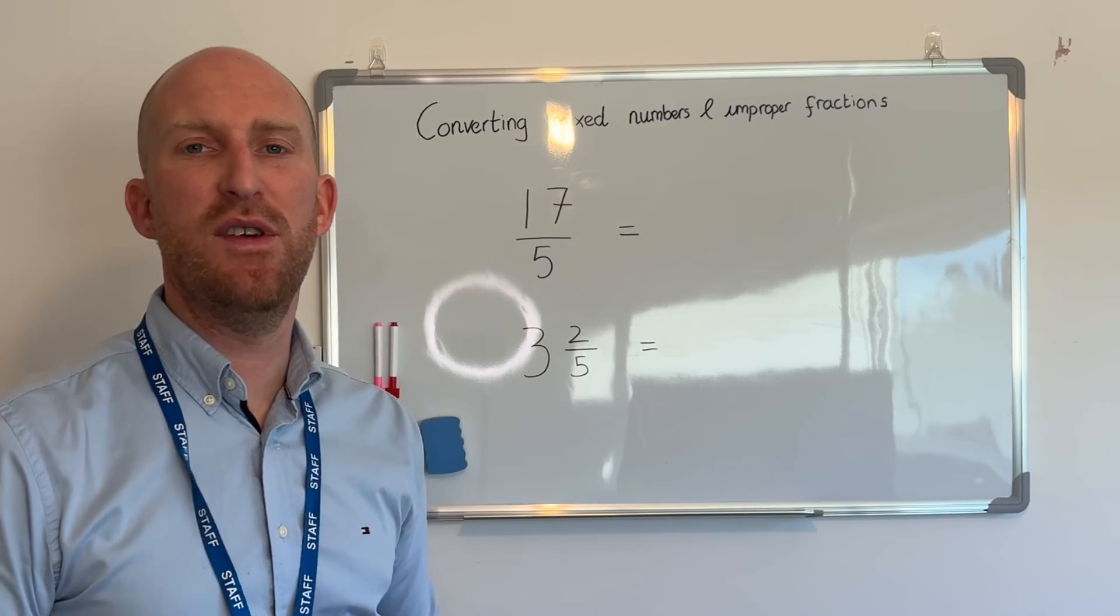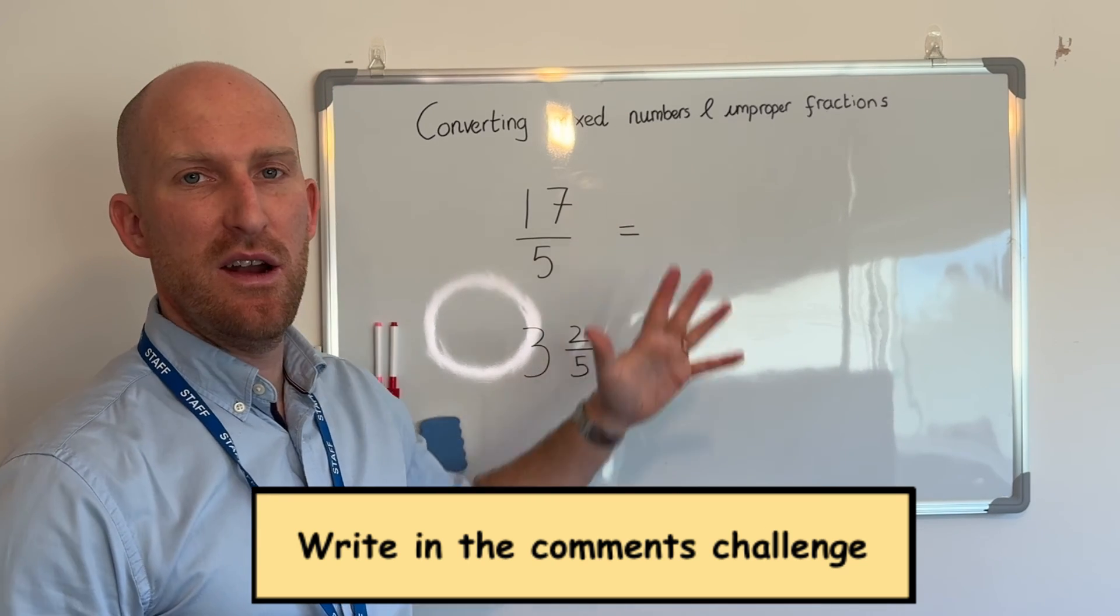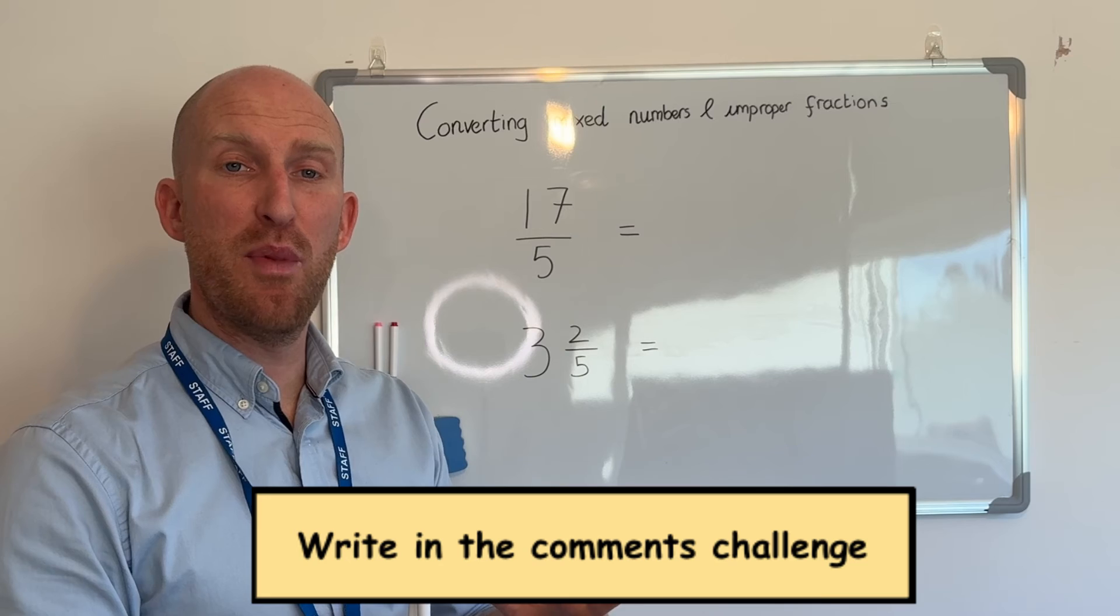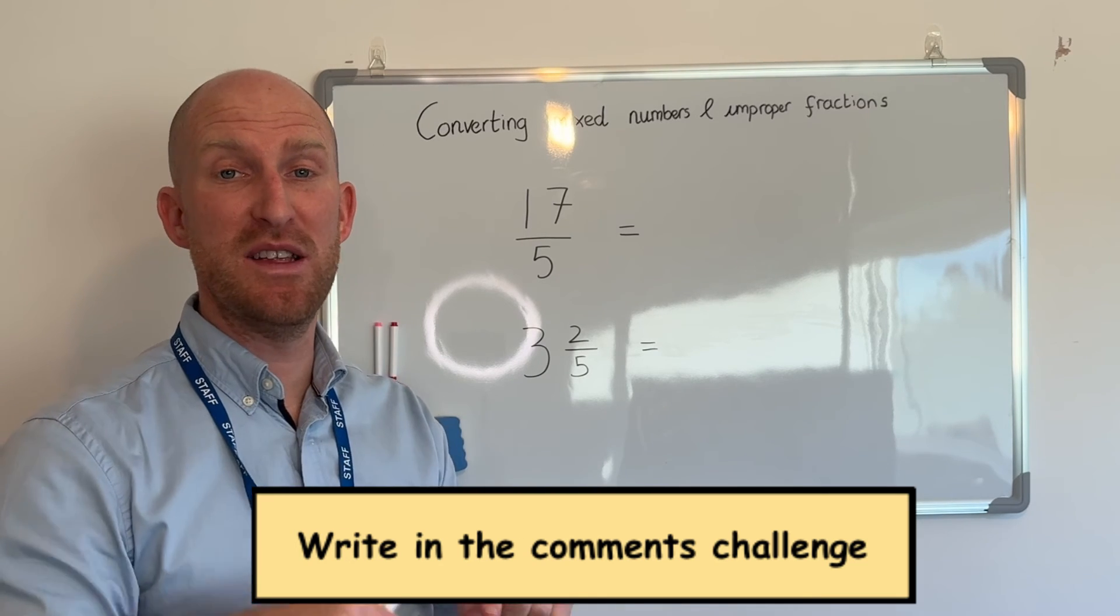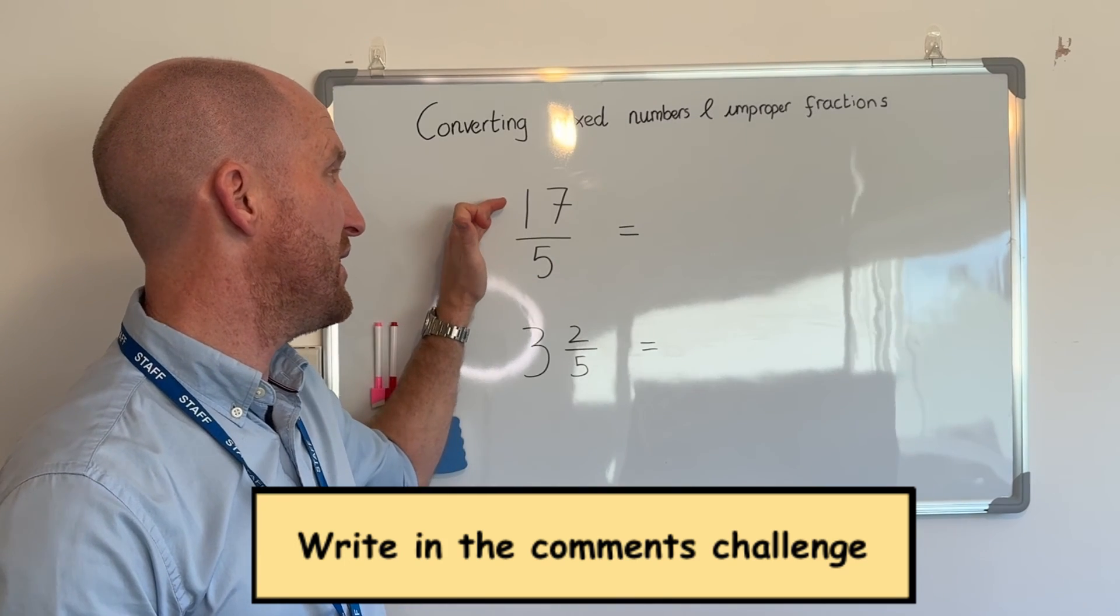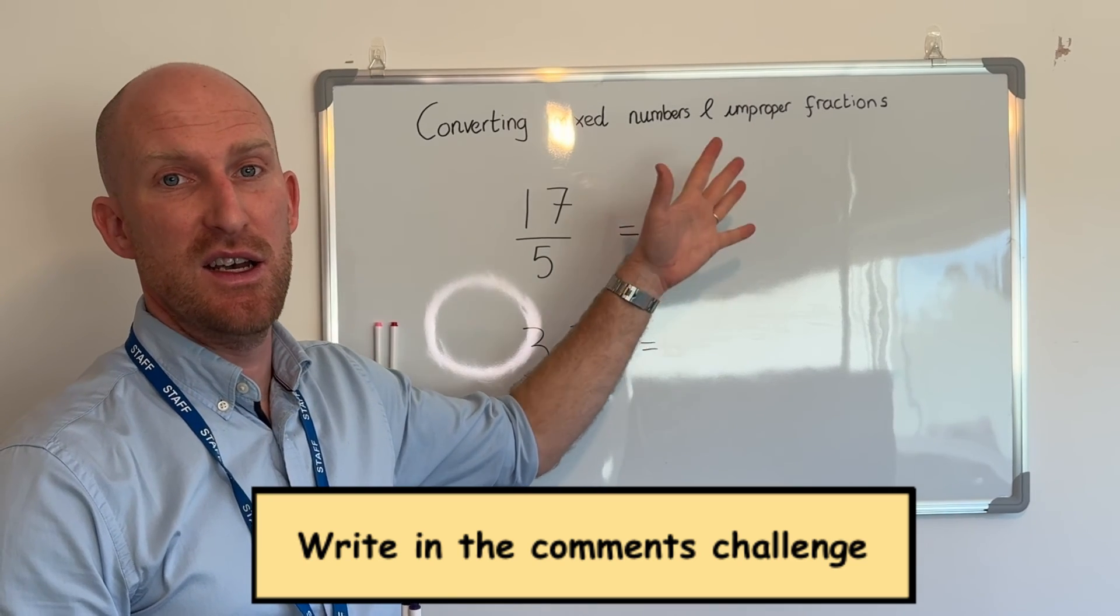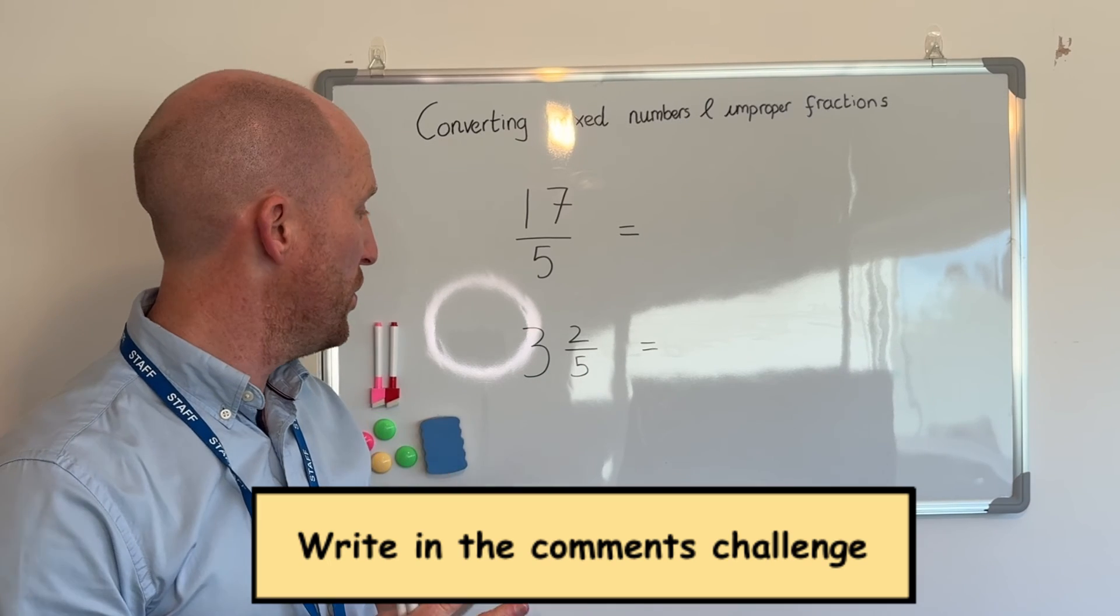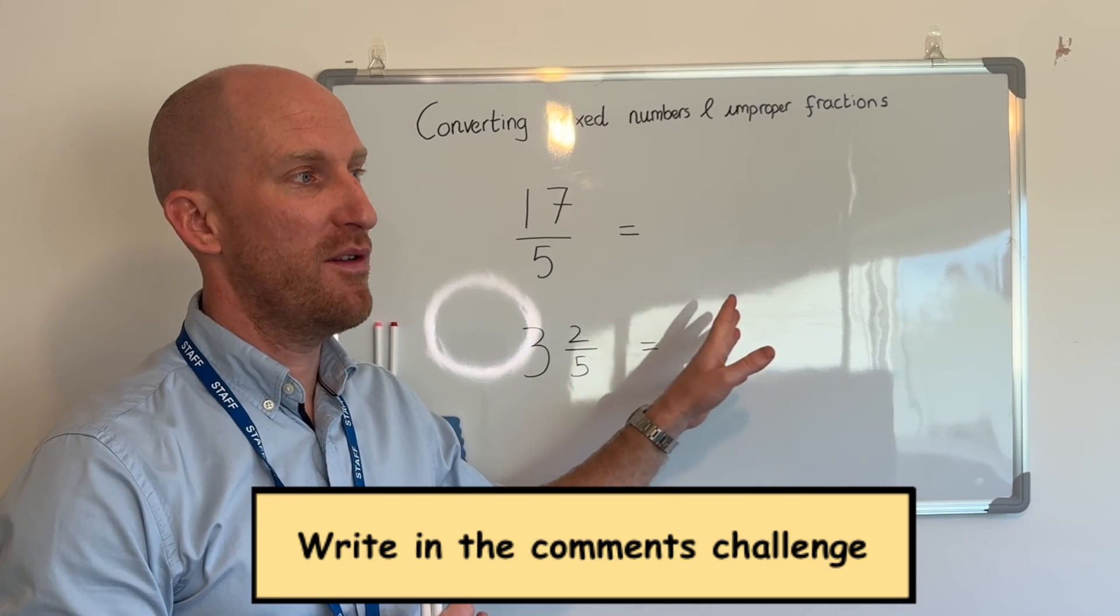Thank you for watching the video today. I hope it was of some value to you. Before you go, on the board here I have two questions for you that you can try on paper at home and then you can type in the answer into the comment section down below and I'll check it for you. So we have seventeen-fifths, that's an improper fraction. What is that as a mixed number? We also have three whole ones and two-fifths. What is that as an improper fraction?